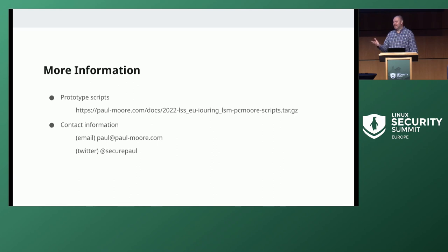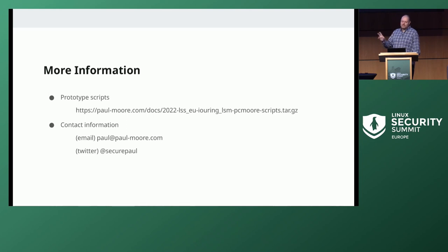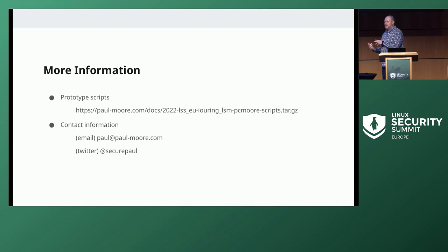Richard made the point that automated scanning is good but you have to constantly update it for new keywords, which is a challenge. In response: the keywords I'm searching for — credential overrides, capability checks — are fairly static and don't really change. The LSM hooks we look for in call sites are generated dynamically from the kernel source in the script, so the overhead for maintaining that is very minimal.